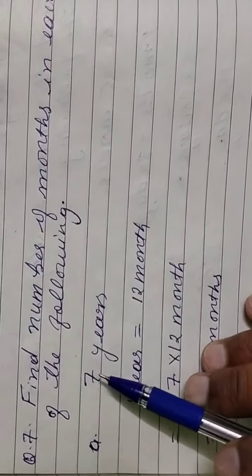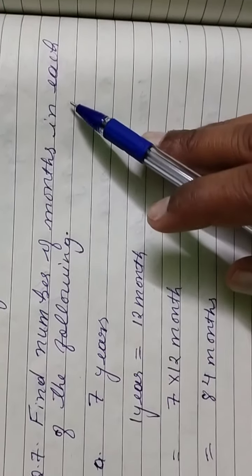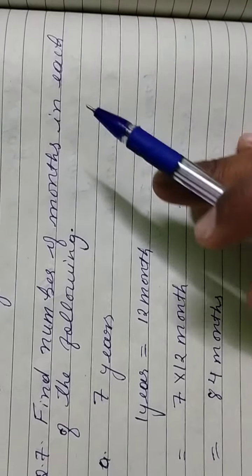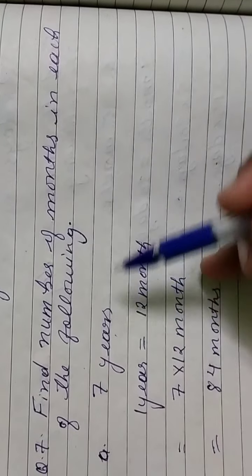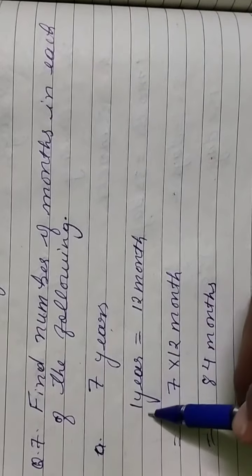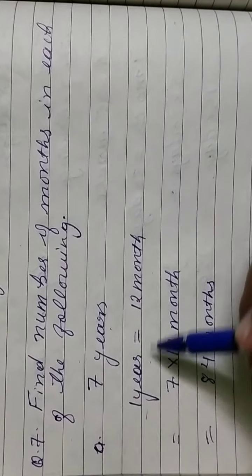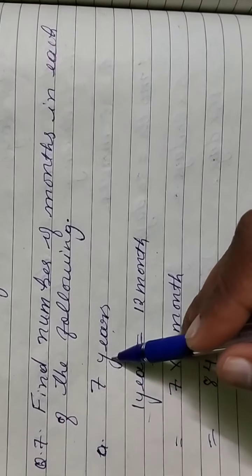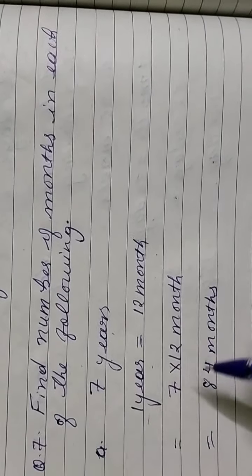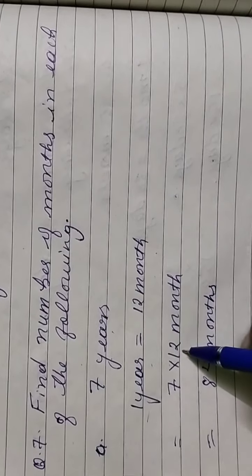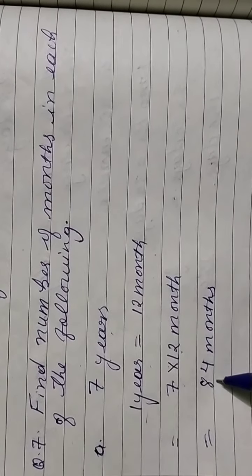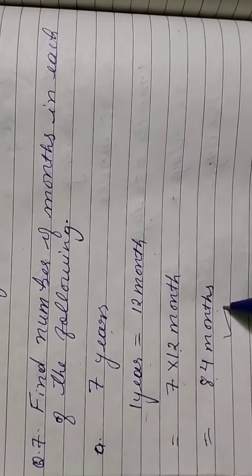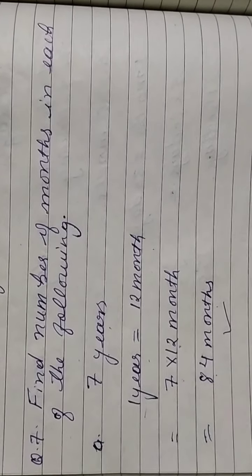Question number 7: Find the number of months. He says 7 years — how many months in 7 years? We know 1 year = 12 months, so 7 × 12 = 84 months.